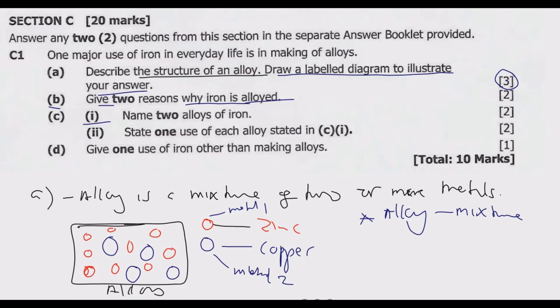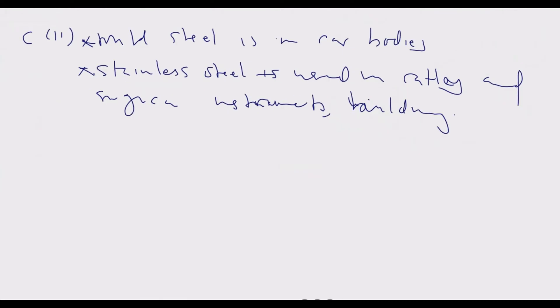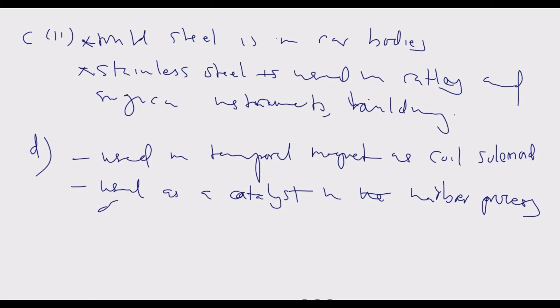Question D, give one use of iron other than making alloys. So this is D. Iron is used in a number of things. Number one, used in temporary magnet as a coil solenoid. Number two, iron is used as a catalyst in the Haber process of producing ammonia. Used as a catalyst in the Haber process of manufacturing ammonia.